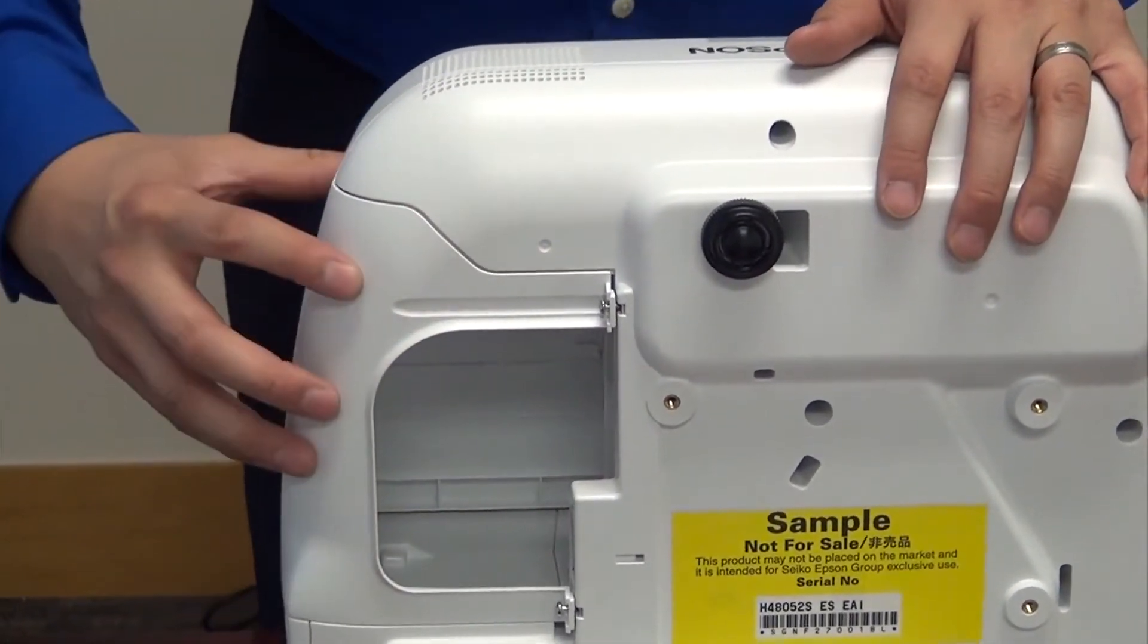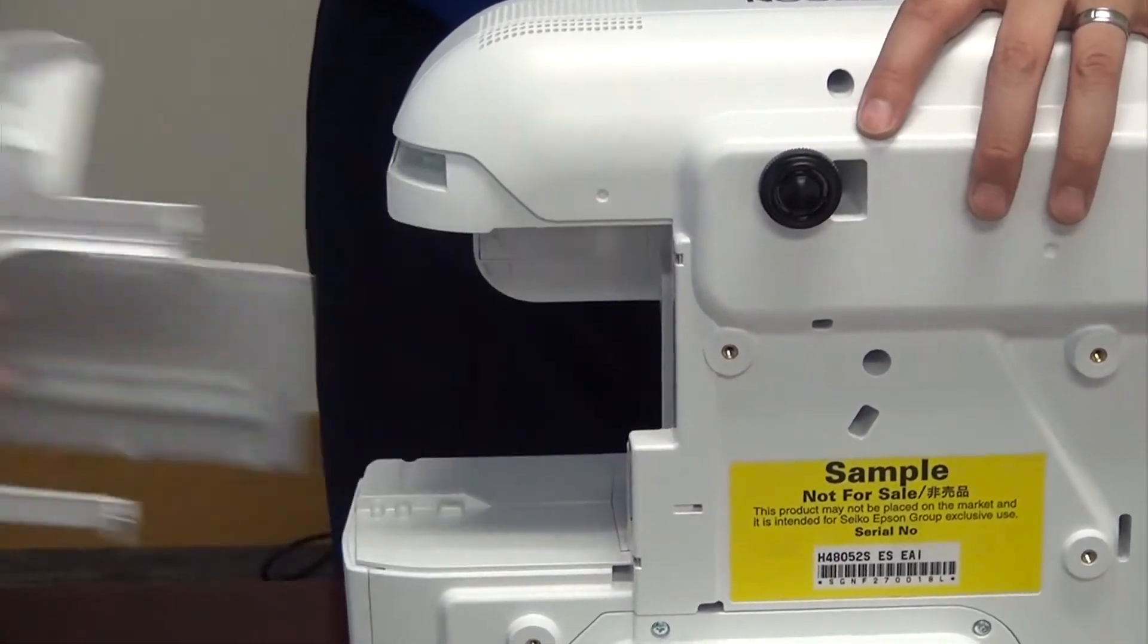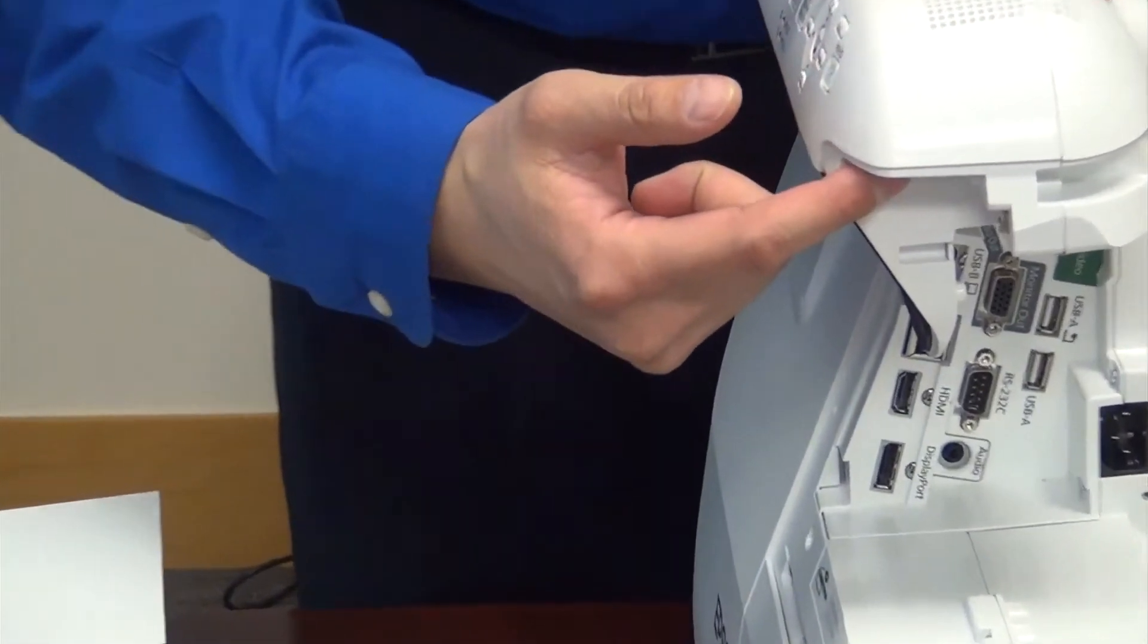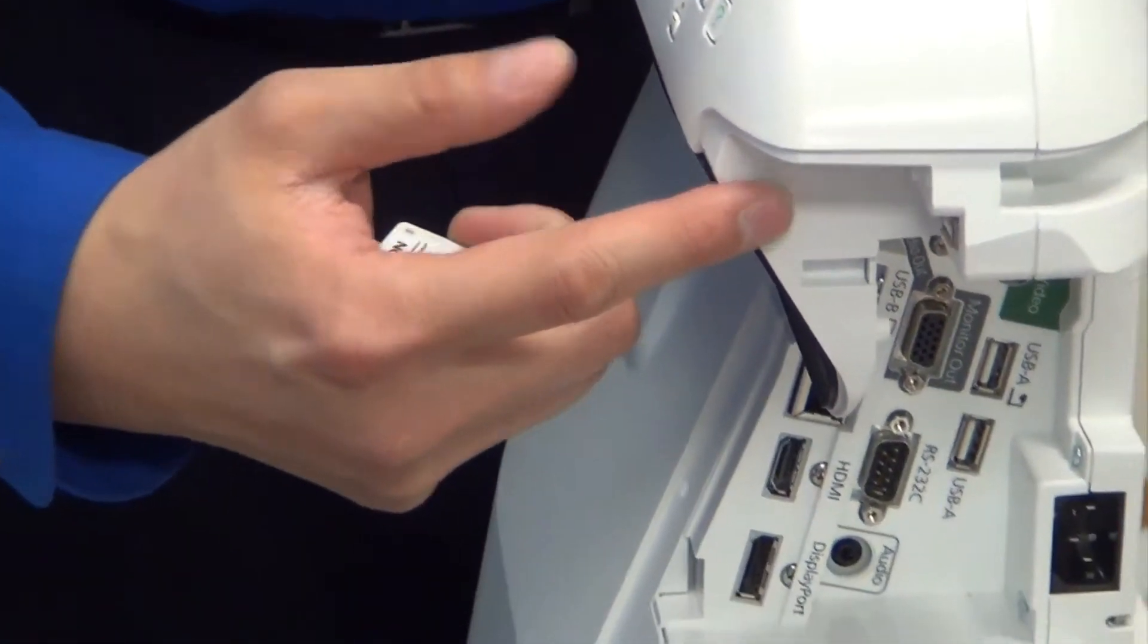There's two screws holding the side panels together. If you want to loosen those up, pull the panel right out. And here is where you install the wireless LAN module.